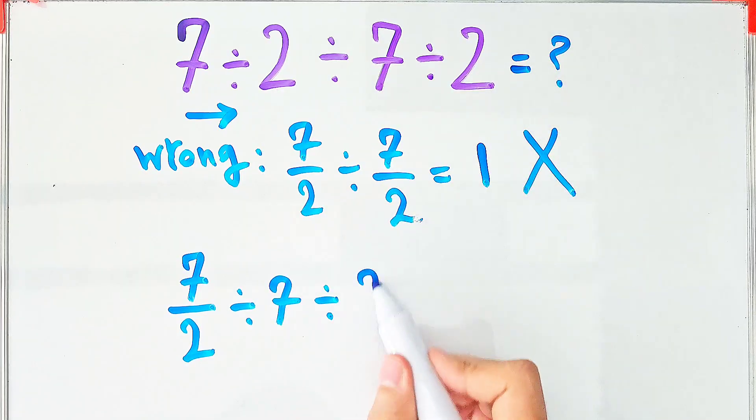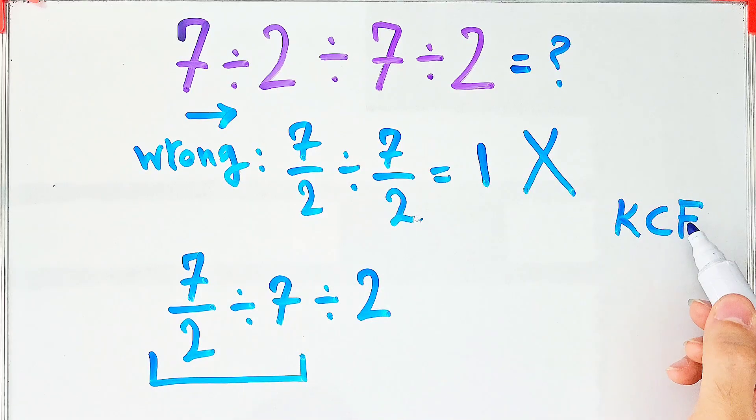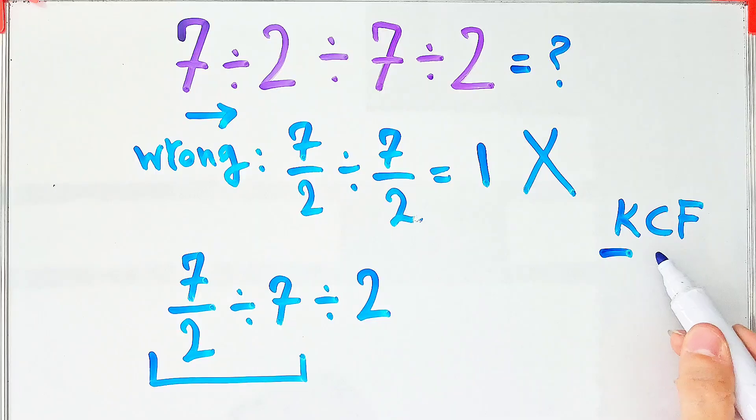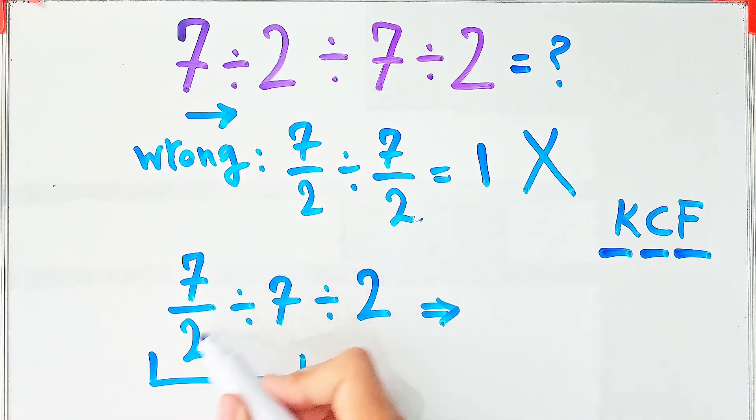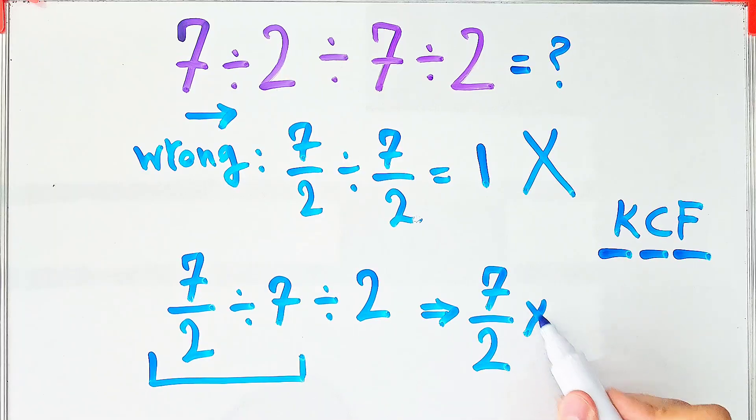Now we have a fraction divided by a number. To solve this part, we use the KCF rule. In this rule, K stands for keep, C stands for change, and F stands for flip. We keep the first fraction as it is, then we change the sign, and after that, we flip the second number.